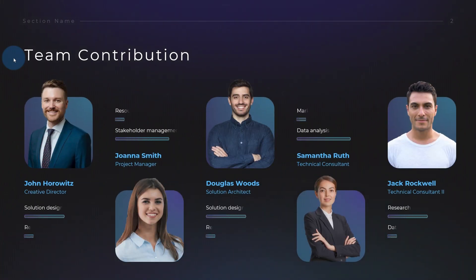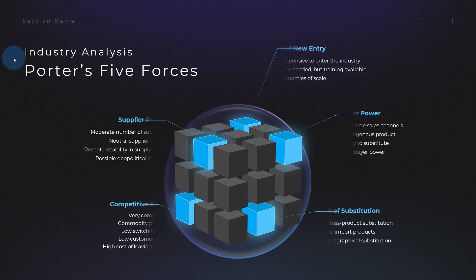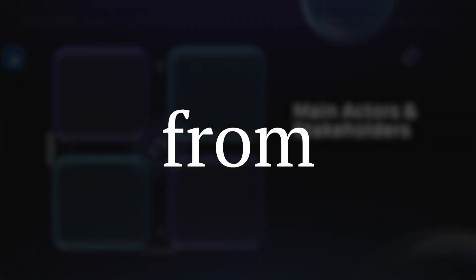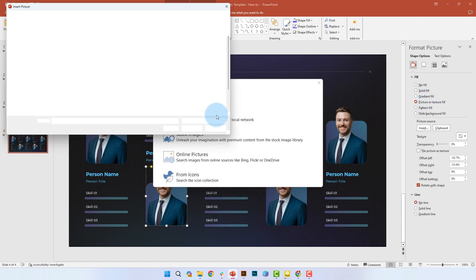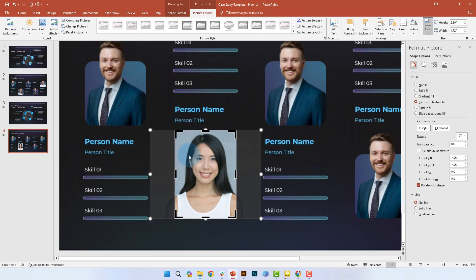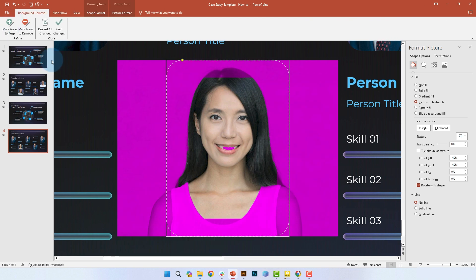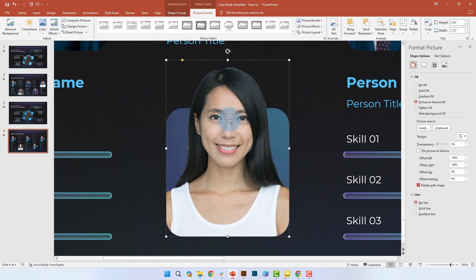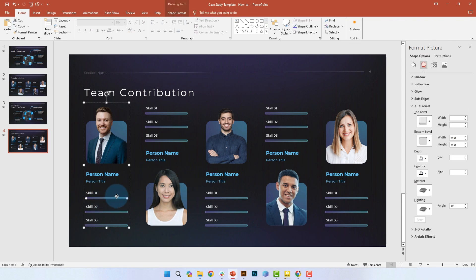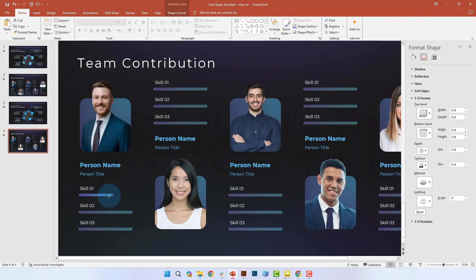Now revealing the second part of the promo code — the word is 'from.' Of course we need to change the pictures and headshots for these teammates, so we're going to apply the same background removal method and insert different pictures for each team member. We'll also quickly adjust the length of each progress bar to make it more realistic.